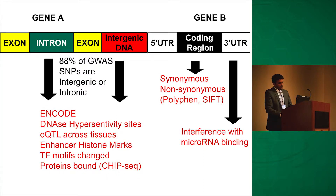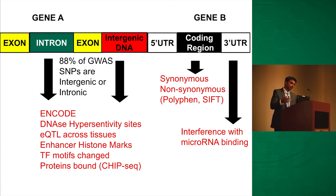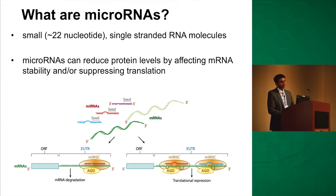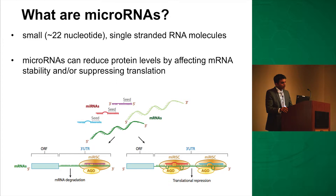You also have coding region SNPs — my first postdoc work in Framingham involved scoring each coding region SNP using PolyPhen and SIFT, which give you a score indicating whether a mutation is damaging or possibly damaging. And then you can have a 3' UTR SNP. There are microRNAs, and interference with microRNA binding is now well known. The central dogma of molecular biology is that information flows from DNA to RNA to protein. MicroRNAs are small single-stranded RNA molecules that can reduce protein levels by affecting mRNA stability or suppressing translation.